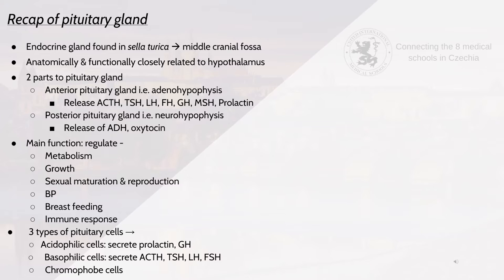The anterior pituitary releases ACTH, TSH, LH, FSH, GH, MSH and prolactin. Whilst the posterior pituitary gland, i.e. the neurohypophysis, releases ADH and oxytocin. The main functions of the pituitary gland are to regulate metabolism, growth, sexual maturation and reproduction, blood pressure, breastfeeding and immune response.